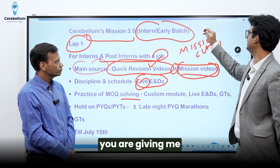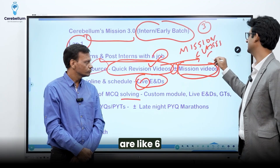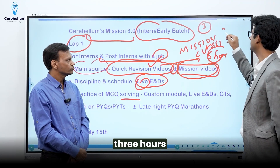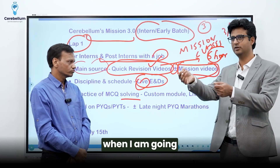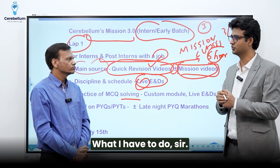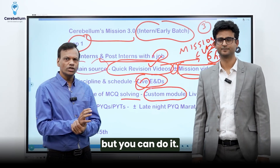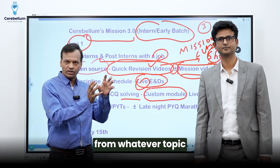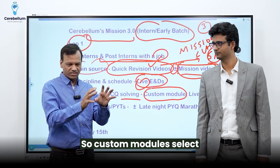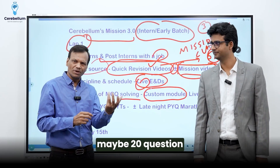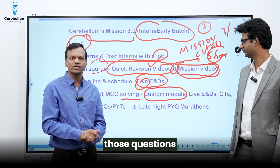For example, say you are given 3 to 4 days to cover Psychiatry, and the quick revision videos of Psychiatry are around 6 hours. So 3 hours one day, 3 hours another day, because as an intern you don't get much time. In between — like when you're going to collect a sample or bringing a report — what you should do is keep solving MCQs. You can make custom modules from whatever topic you studied the last day, select those topics, and make a paper of 20 to 50 questions — whatever you are likely to be solving — and solve those questions in the custom modules.